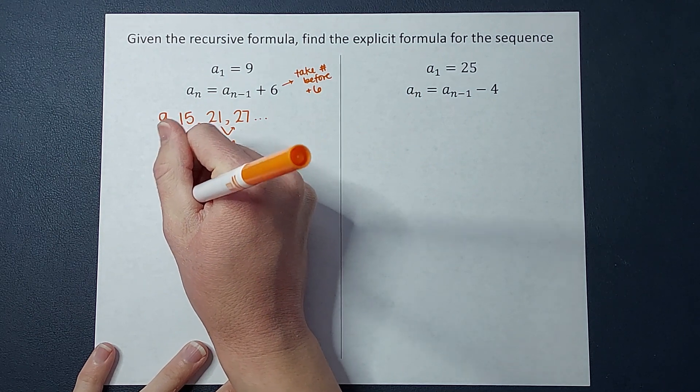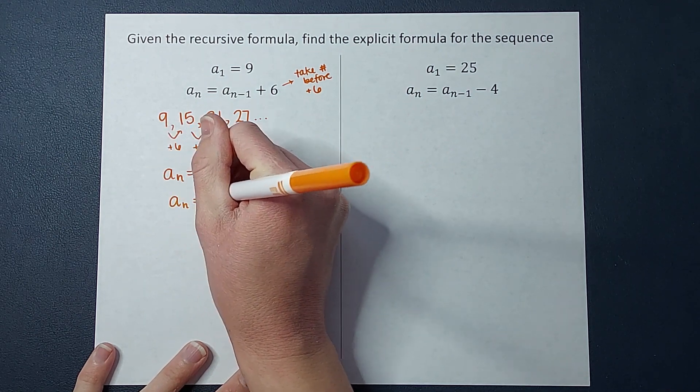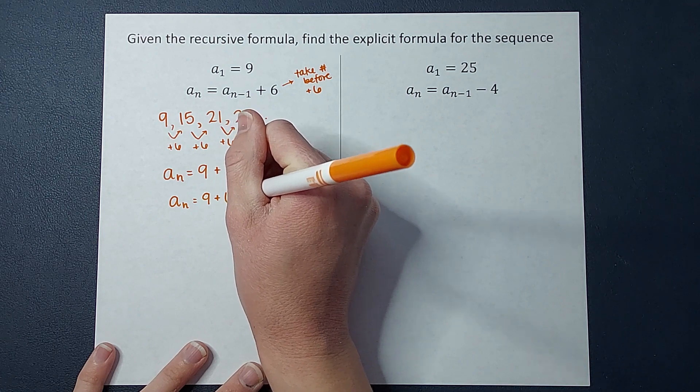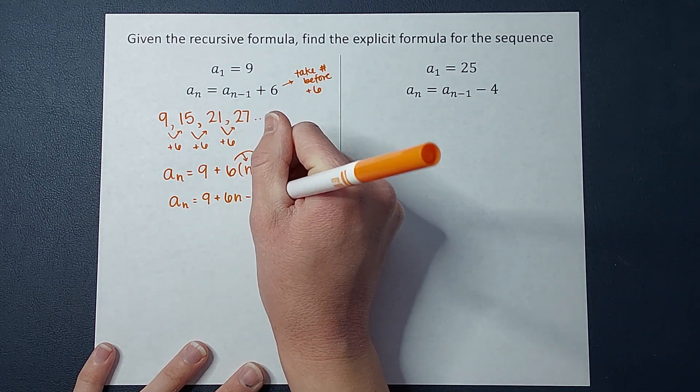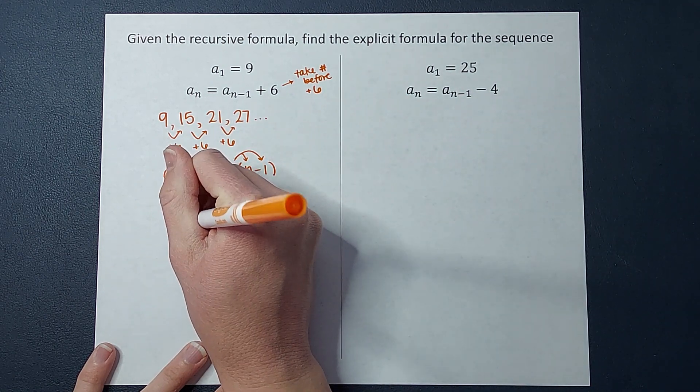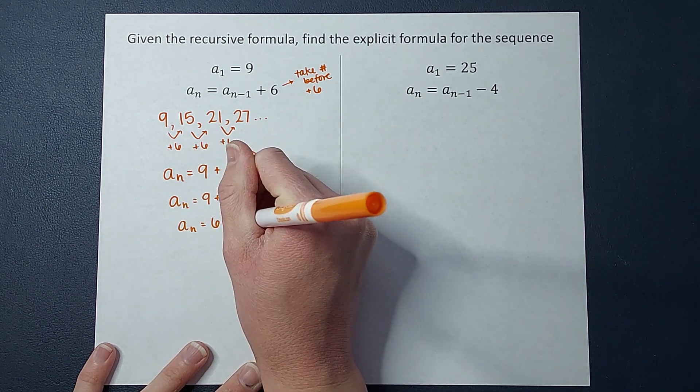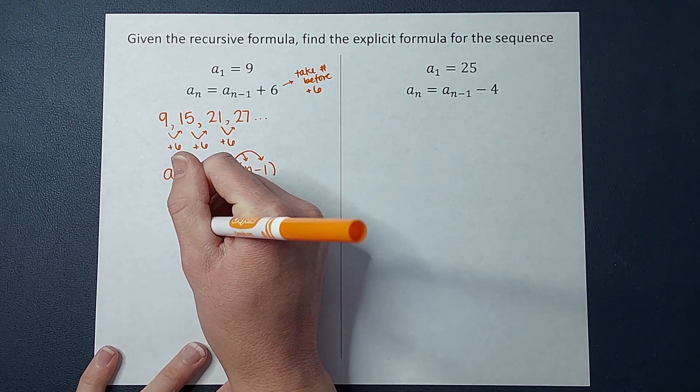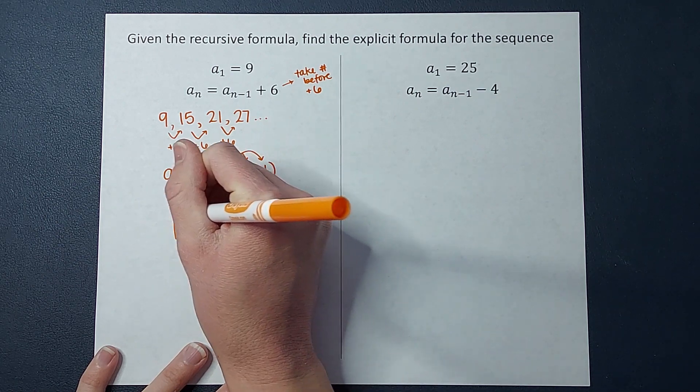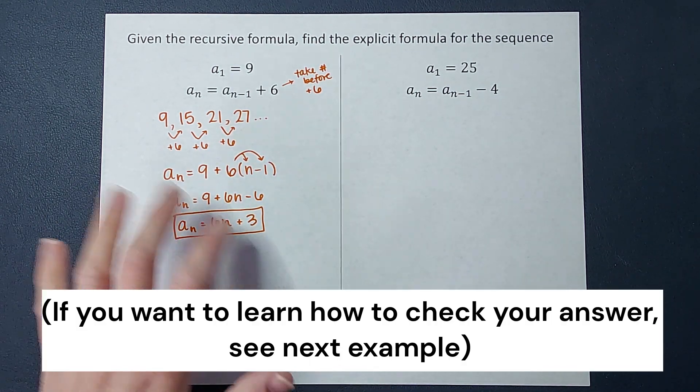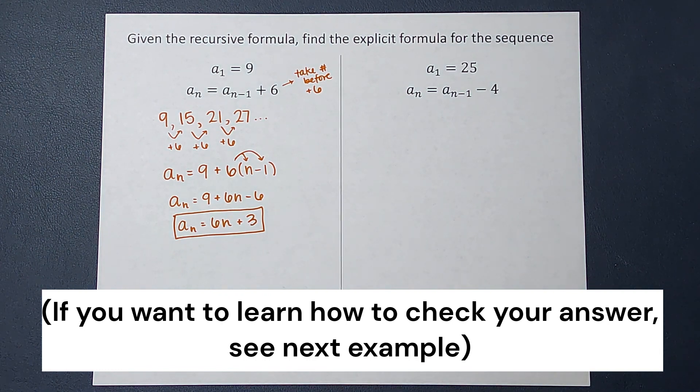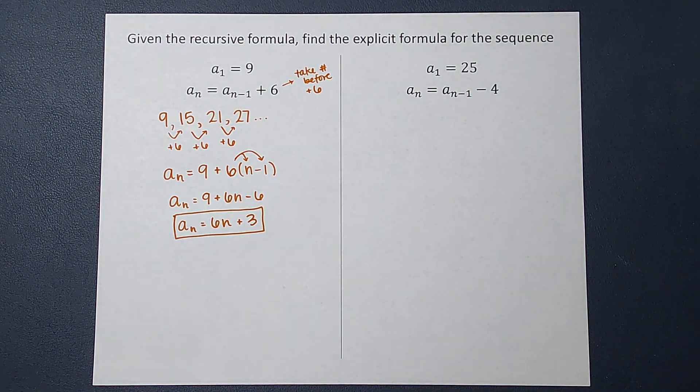Distribute those in. So I end up with a sub n equals nine plus six n minus six. And then I'm going to end up with six n plus three. Awesome. Now you can always check yourself by plugging in and make sure you get the right number in your sequence.